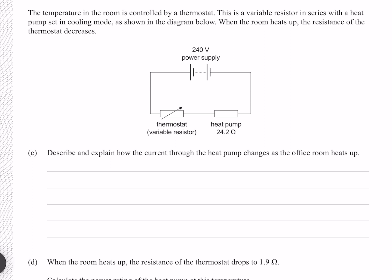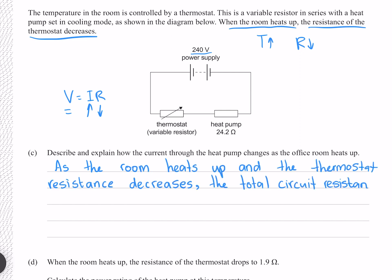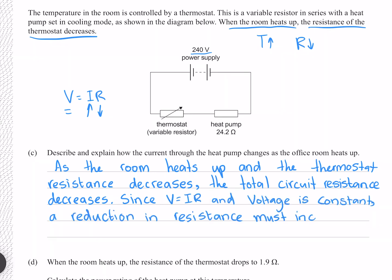The temperature in the room is controlled by a thermostat — a variable resistor in series with a heat pump set in cooling mode. When the room heats up, the resistance of the thermostat decreases. Describe and explain how the current through the heat pump changes. As temperature increases, resistance decreases. Given V = IR and that the power supply voltage stays constant, if resistance decreases then current must increase. As the room heats up and thermostat resistance decreases, total circuit resistance decreases, so a reduction in resistance must increase the current.